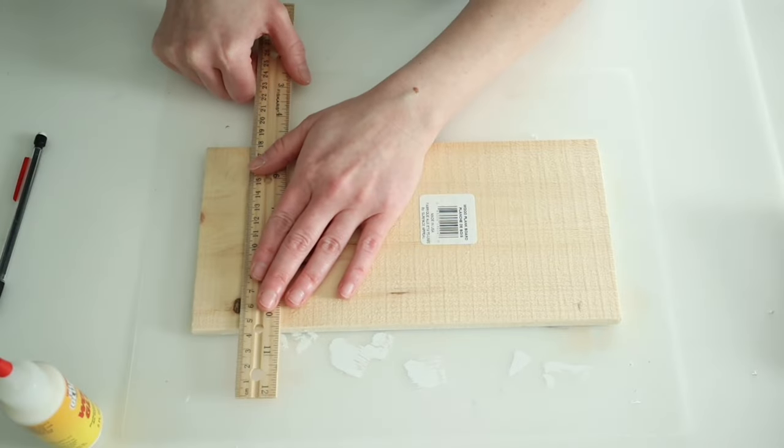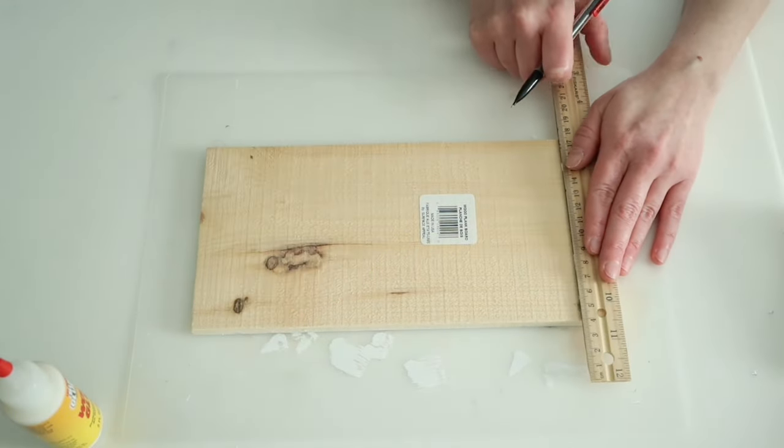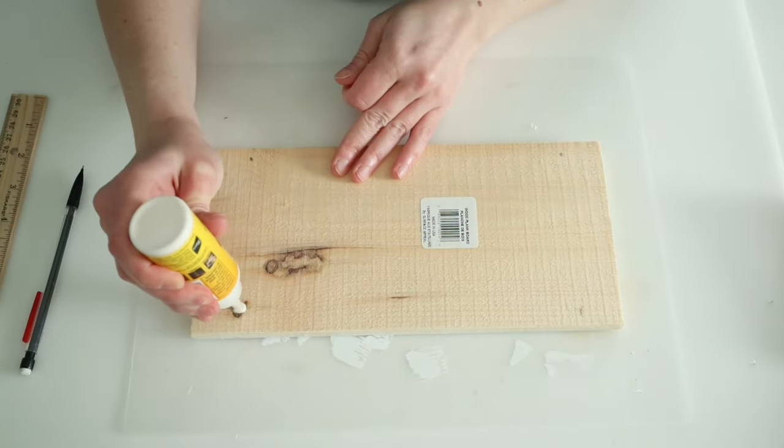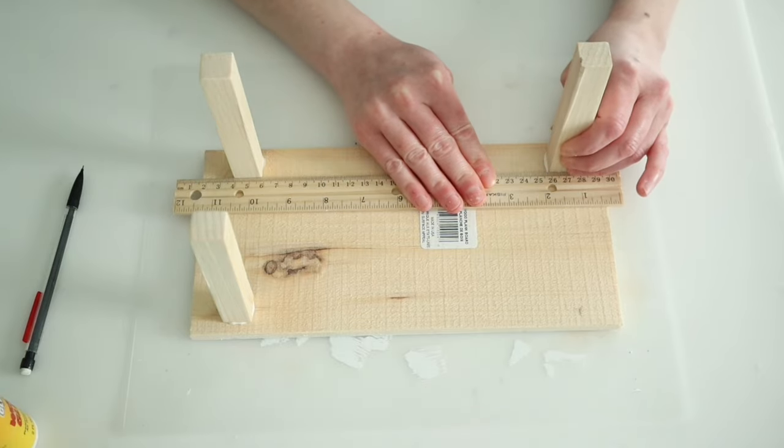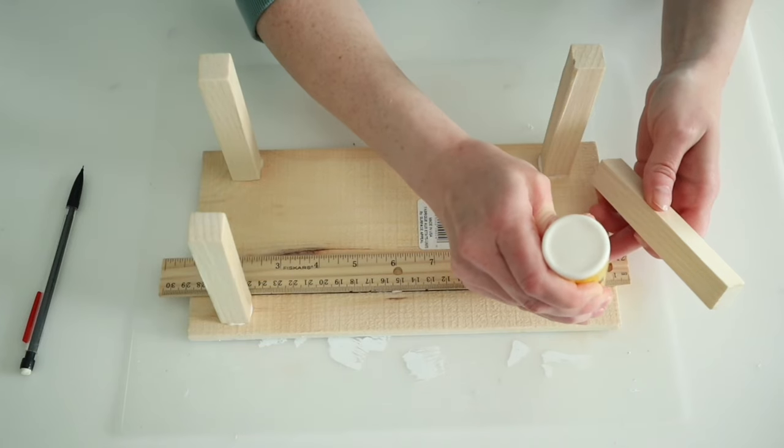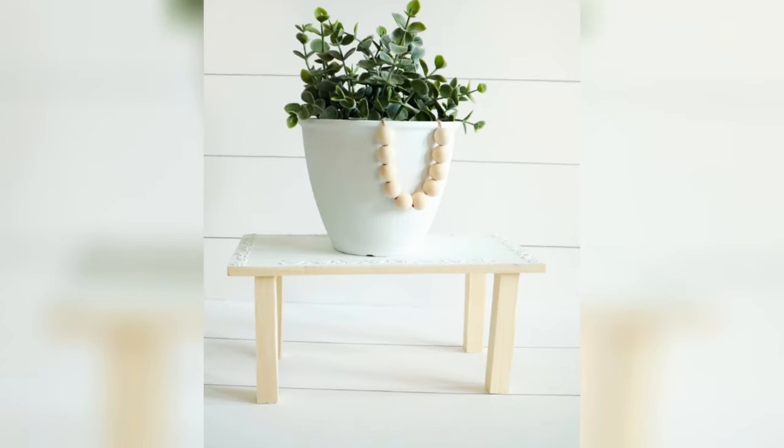Then I just flipped my board over and I kind of marked where I wanted to put the legs, and then I'm just going to use some of Dollar Tree's wood glue to attach my legs. And here is how it turned out.